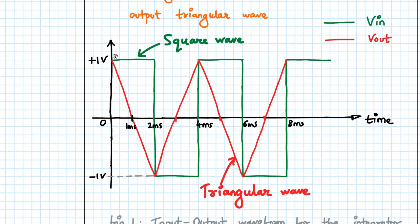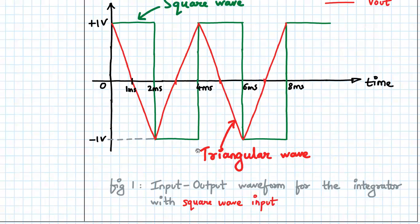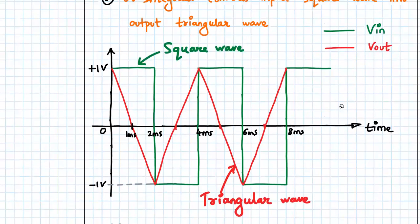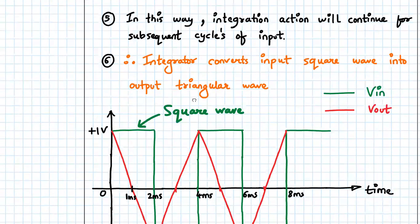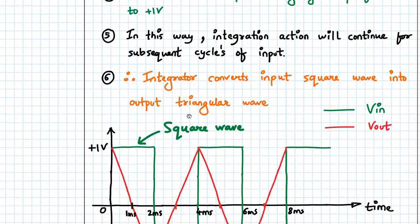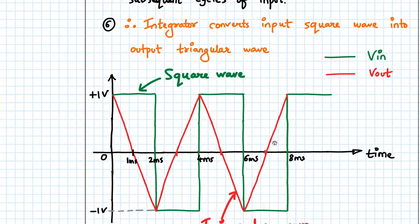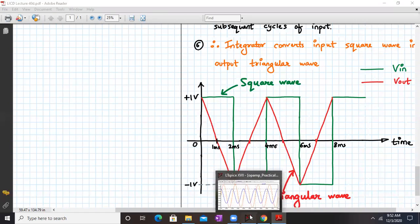So basically for a square wave input we get a triangular wave at the output. These are the input-output waveforms for a practical integrator circuit with a square wave input. For a constant positive DC value we are getting a negative going ramp because of the negative sign in V out. The integrator converts a square wave input into a triangular wave output, and this integration action continues for all subsequent cycles.